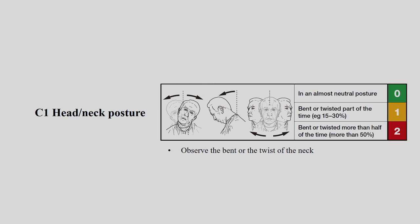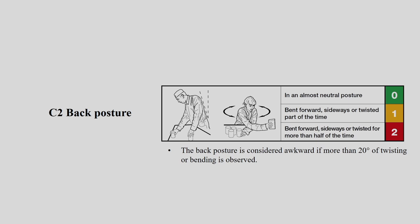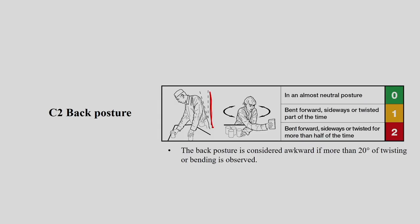For Stage C, awkward posture, assessment covers the head, neck, and trunk. For back posture: almost natural or neutral posture scores 0; bent or twisted part of the time scores 1; bent or twisted more than half of the time scores 2. Back posture is considered awkward if more than 20 degrees of twisting or bending is observed. This is a gross identification of posture.